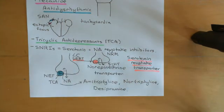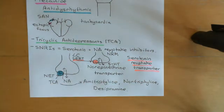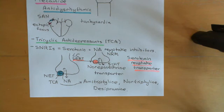Serotonin and norepinephrine reuptake inhibitors block both the norepinephrine transporter and the serotonin reuptake transporter, therefore increasing both noradrenergic and serotonergic signaling onto the enkephalin-containing interneurons. This potentiates the activity of those interneurons and therefore potentiates the block of the gate between the primary and secondary pain neurons.